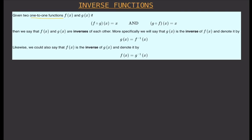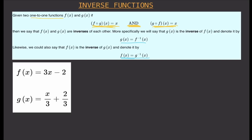More specifically, we say that g(x) is the inverse of f(x) and denote it with this notation, or we could say that f(x) is the inverse of g(x) and denote it with this notation. It's very important that we understand what 'and' means — both conditions must be true at the same time. If only one of them is true, then the functions are not inverses of each other.